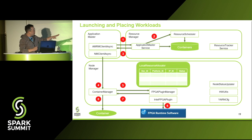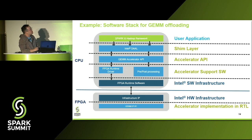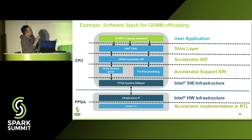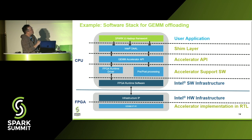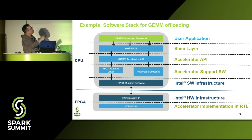When the Spark application master places a workload and sends constraints to the resource scheduler, the scheduler returns a container object. In the container context, we insert the FPGA constraints as environment variables. The container manager reads those constraints and tells the FPGA plugin manager what to do — for instance, what IPs to download and which devices to isolate to which container. After the FPGA device is ready, it reports back and the container manager launches the container.